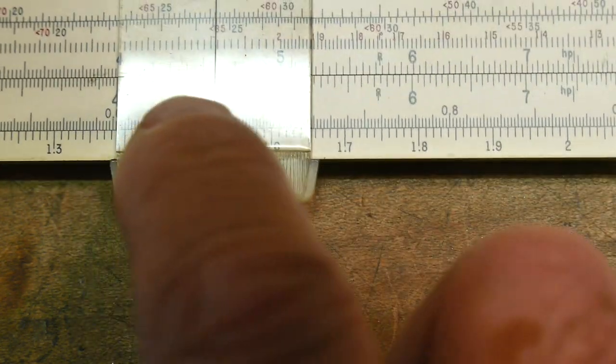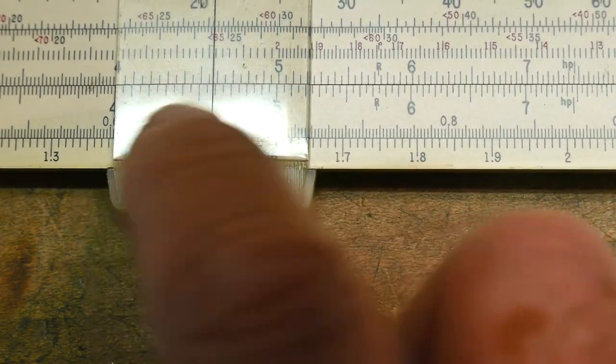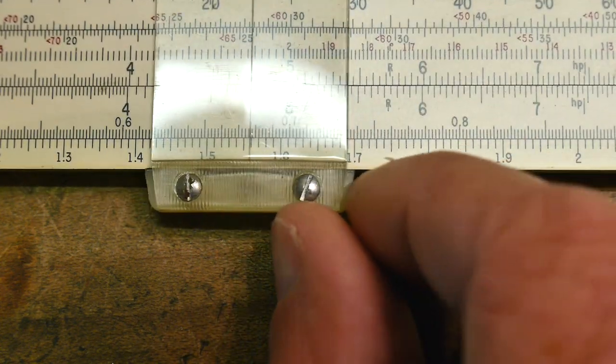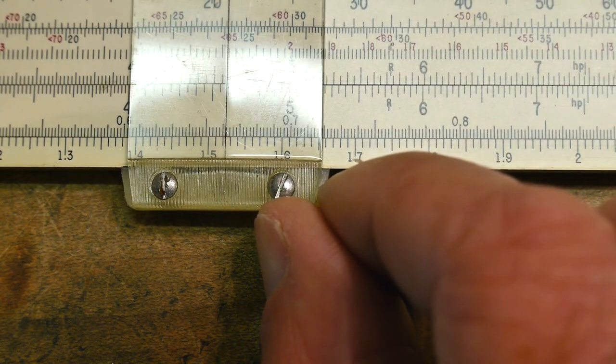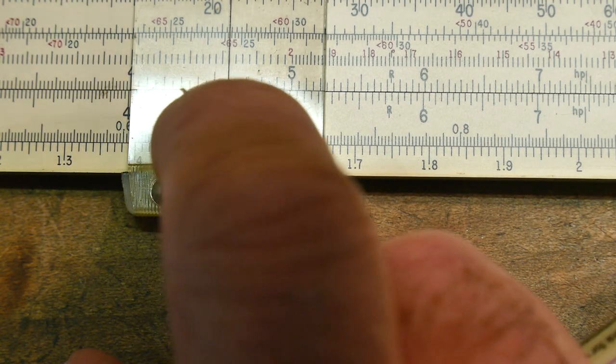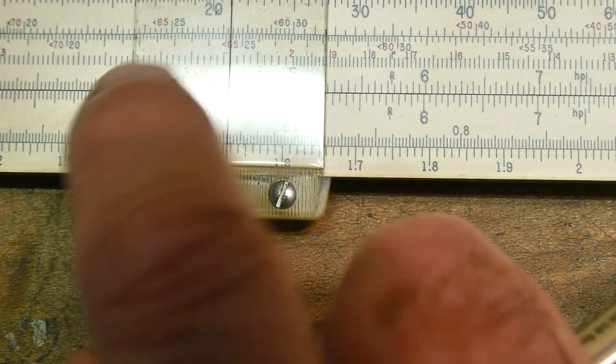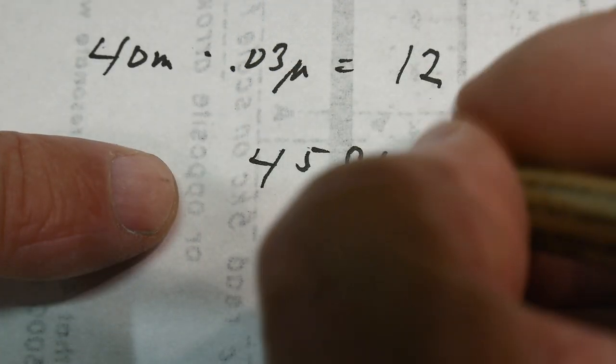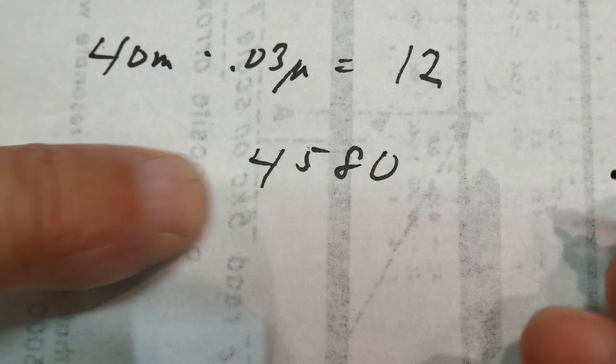And so, we're going to get 4, let's see here, number 12, right? We're going to get 4, 5, 8. So, 4, 5, 8. So, what do we know in decimal points? We know that's 4580 hertz. So, do you want to do that on the calculator? See how close we got?